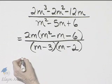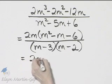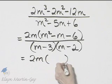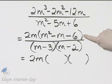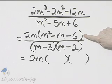Now, we still haven't completely factored the numerator, so let's finish that. I'll rewrite my 2m, and I'll draw two sets of parentheses to see if this trinomial factors into two binomials.